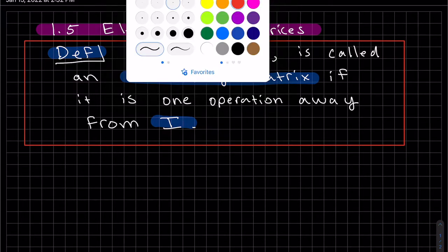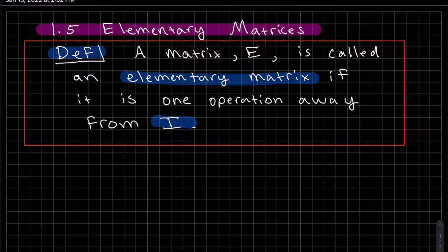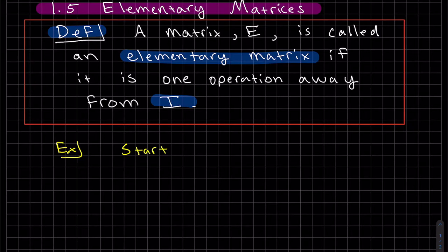So let's look at an example and then we'll go through all of them. The idea is you start from I, you start from the identity, you do an elementary row operation and then that will be your elementary matrix. So for example, start with I and let's just do one row operation. Let's do three row one.